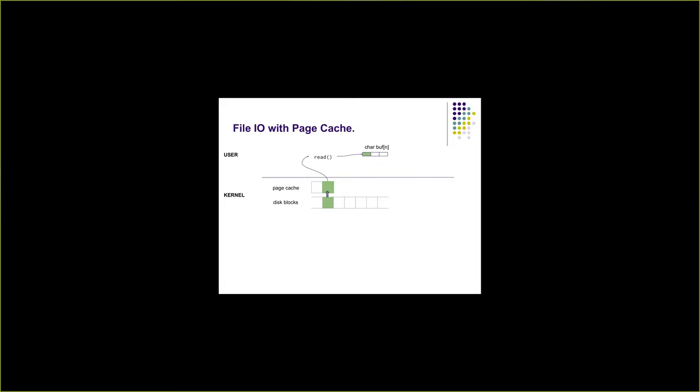When we do a read system call, the kernel looks for that particular block in the page cache. If the block is not present in the page cache, that is when the kernel actually reads the block from disk, puts it into the page cache, and then gives the data to the application from the page cache. Note that reads always see page cache pages, not the disk blocks directly. This also provides a nice virtual interface for the Linux kernel where all reads just need to worry about looking into page cache, and the maintenance between page cache and disk blocks is taken care of by other modules.